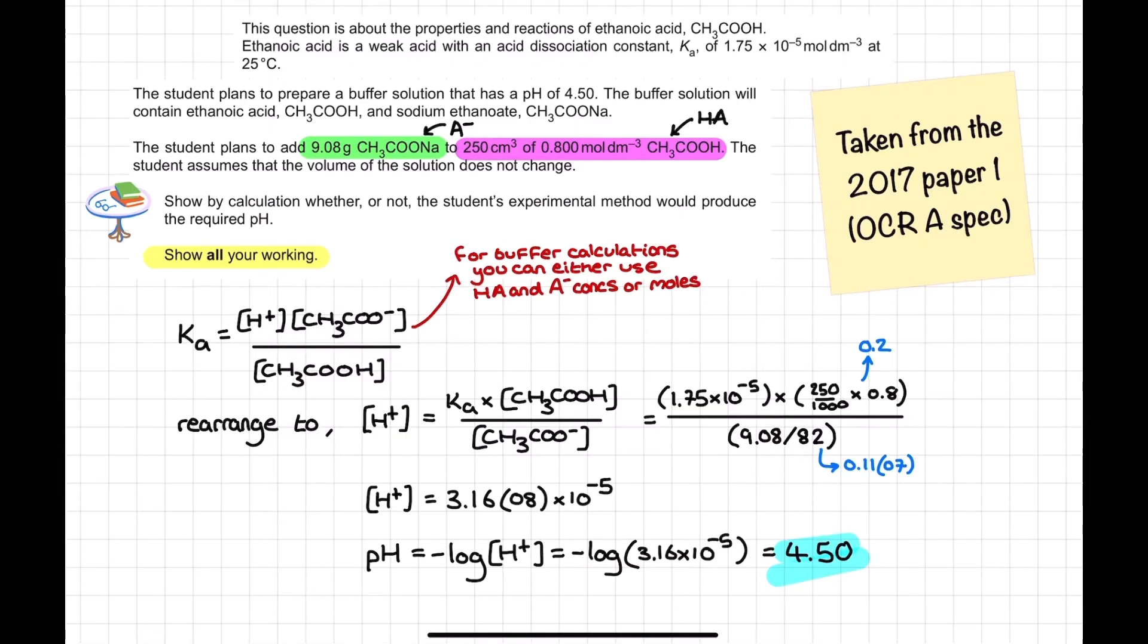Show by calculation whether or not the student's experimental method would produce the required pH. You'll notice here I've highlighted up as well 'show your working' because they did expect to see some use and rearrangements of the Ka expression. So I have my Ka expression and I'm definitely not going to square the numerator because I know that that's only an approximation I can make when I'm looking at weak acids by themselves outside of the context of a buffer. And I've got a little extra bit of information here. When we've got buffer solution calculations and I do my rearrangement of the Ka expression, here it is. I would almost suggest by the way learning this equation as a separate equation since it's so common that buffer calculations come up.